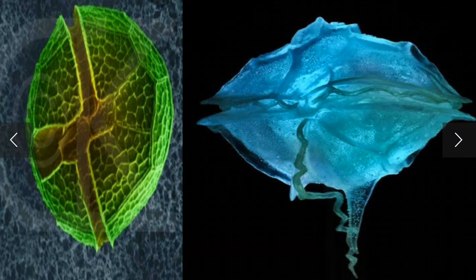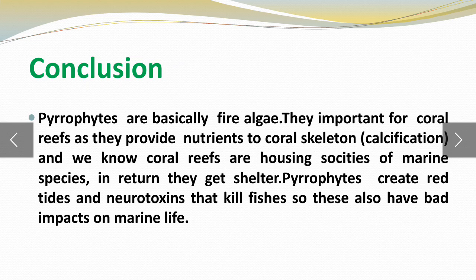Regarding the structure of dinoflagellates, they are called biflagellates because they have two flagella in their body. Pyrophytes are basically fire algae and are important for coral reefs, as they provide nutrients to the coral skeleton. Coral reefs are the housing society of marine species and in return they get shelter. However, pyrophytes also create red tides and neurotoxins that kill fishes, so they also have a bad impact on marine life.